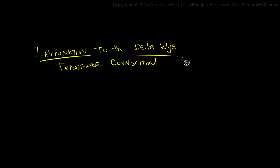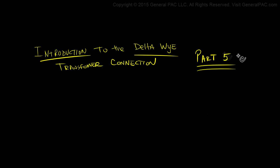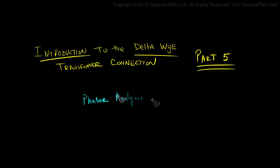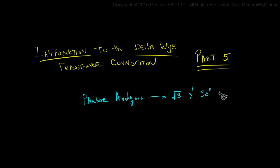Introduction to the delta-Y transformer connection, part 5. In part 5, we're going to perform phasor analysis on the delta-Y transformer connection and look at how the square root of 3 and the 30 degrees phase shift comes into play.